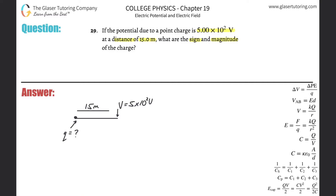The formula for the voltage due to a point charge at a certain point is equal to the electrostatic constant k multiplied by the charge itself, divided by the radius — the distance between the charge and the voltage. Check out number 25 for more detail on this.